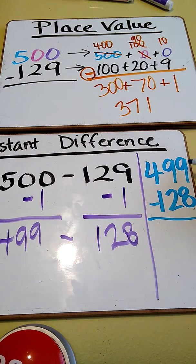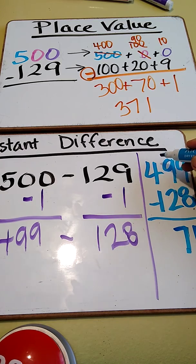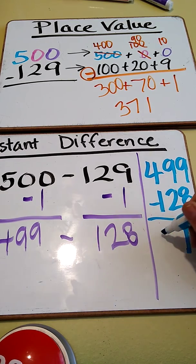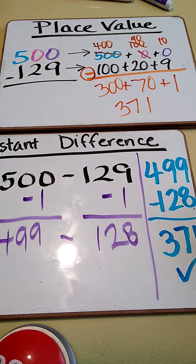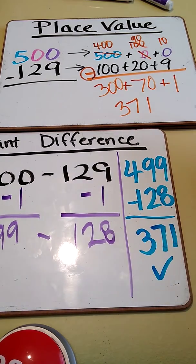No regrouping at all. 9 is bigger than 8. 9 is bigger than 2. 4 is bigger than 1. So if you are doing the algorithm here, 9 minus 8 is 1. 9 minus 2, which is really 90 minus 20, is 7. 4 minus 1, which is really 400 minus 100, is 3. My answer is 371. That checks out. 371. That checks out.